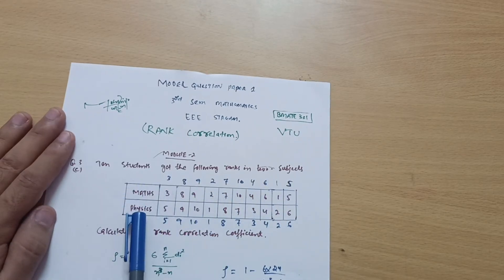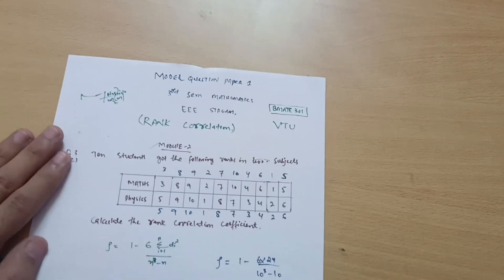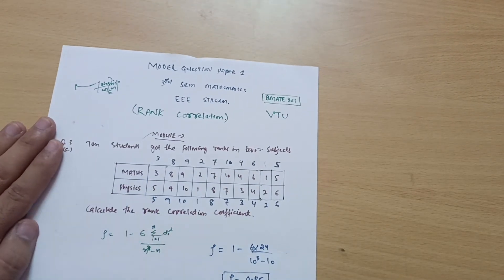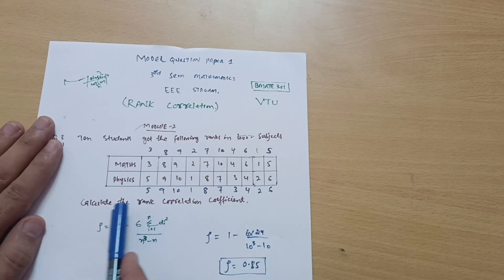Now I have to calculate the rank correlation coefficient. It is also called Spearman's rank correlation coefficient. There is a formula available in your handbook.